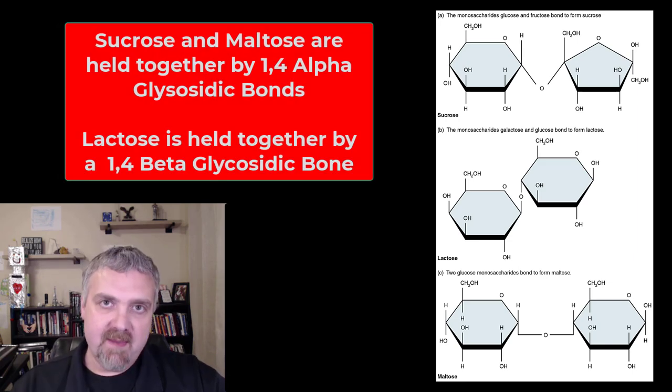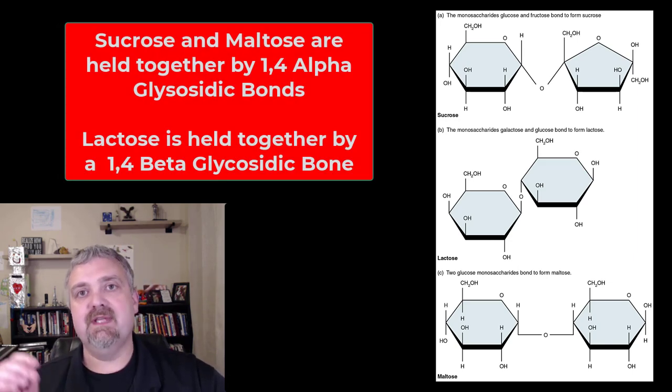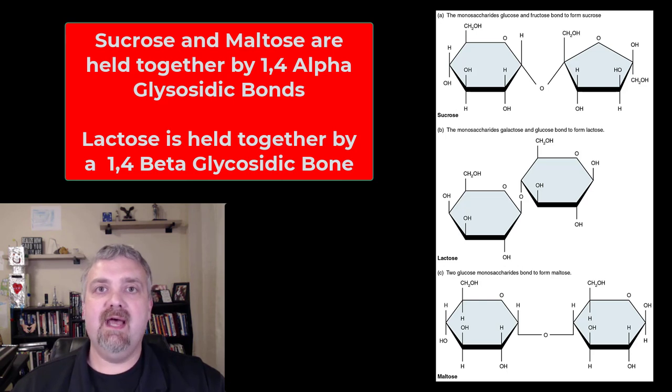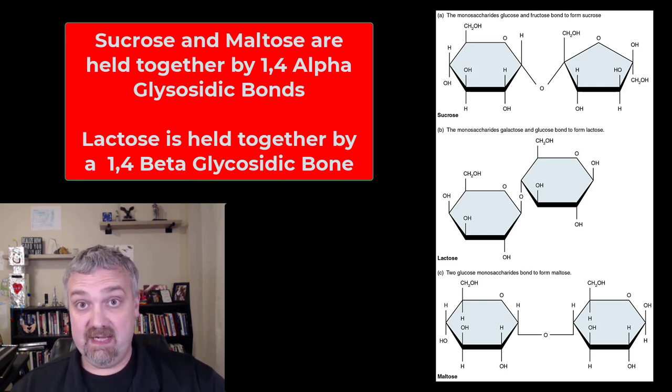Hey everybody, Dr. Rowe here. We just finished talking about the monosaccharides, glucose, fructose, and galactose. Now we're going to look at how they join together and bond to form disaccharides.